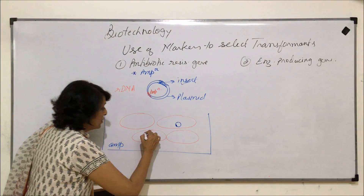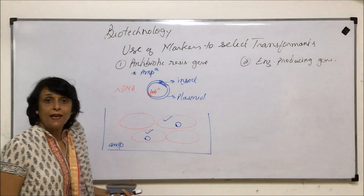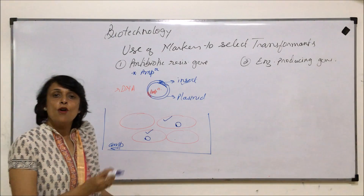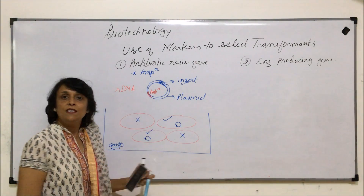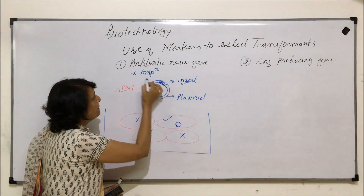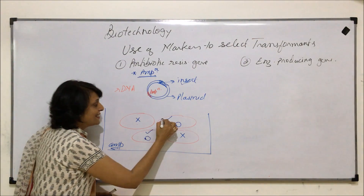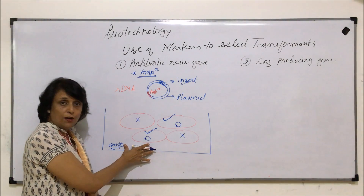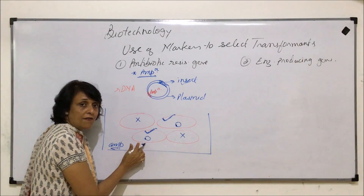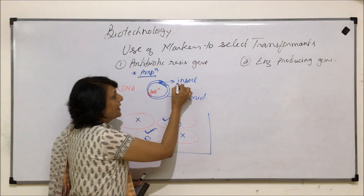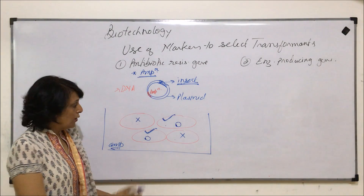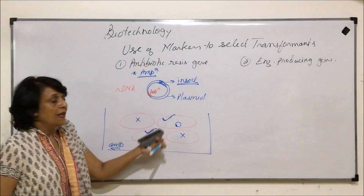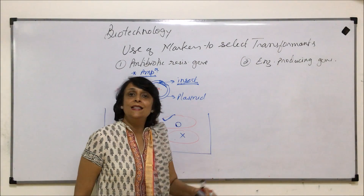The E. coli that received the R-DNA also have the ampicillin resistance gene, so these E. coli will survive in this medium. Whereas the E. coli in which our DNA could not penetrate will not be able to survive and will die. So using this ampicillin resistance gene as our marker, we have selected our transformants — the cells that will give us the protein we are targeting.